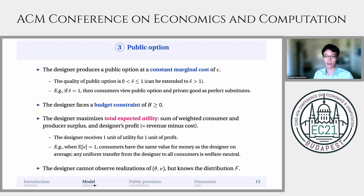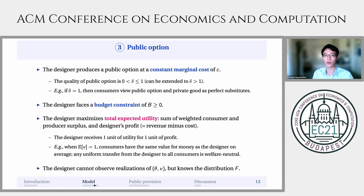The designer maximizes total expected utility — the sum of weighted consumer surplus, producer surplus, and the designer's own profit from supplying the public option. I assume that the designer has a Pareto weight of 1, so she receives 1 unit of utility for 1 unit of profit. When the average Pareto weight of consumers is also 1, consumers have the same value for money as the designer on average, and we are back to the standard mechanism design world where any uniform transfer from the designer to all consumers is welfare neutral. Finally, the designer cannot observe individual realizations of consumer types, but knows the distribution f among the consumer population.